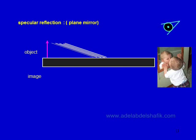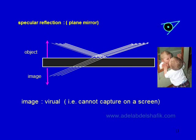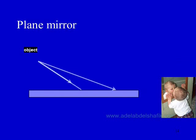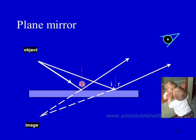If an object sends rays and they are reflected by a mirror and received by an eye, the eye traces them back to form an image. This image is a virtual image — you cannot capture it on a screen.